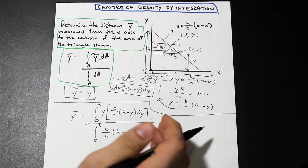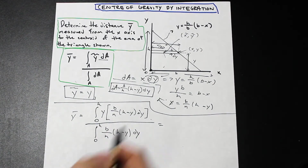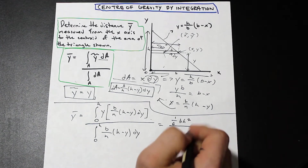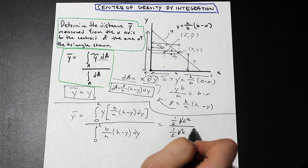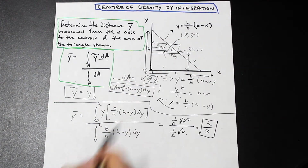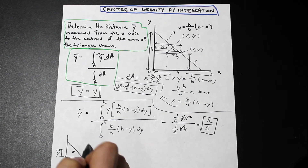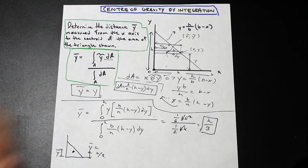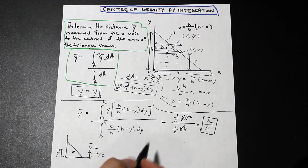If we go ahead and work this expression out — I'll leave that to you — you should arrive at, for the numerator, (1/6)bh², and on the denominator, (1/2)bh. The b's cancel and the h's simplify, leaving simply h/3. So the distance from the x-axis to the centroid of this triangle, y bar, equals h/3. This applies to any triangle — as we know, the distance from the base of any triangle to its center of gravity is h/3. We've proved that using this integration method.